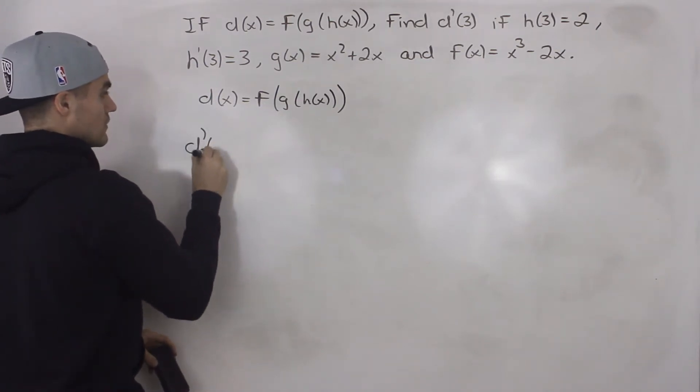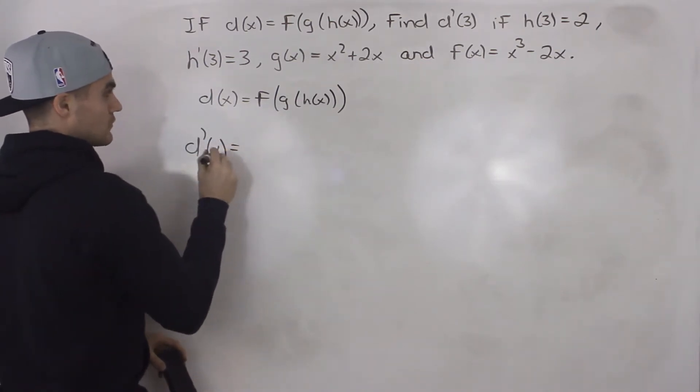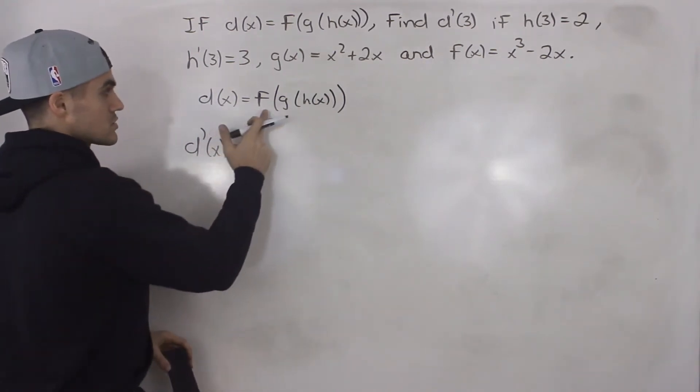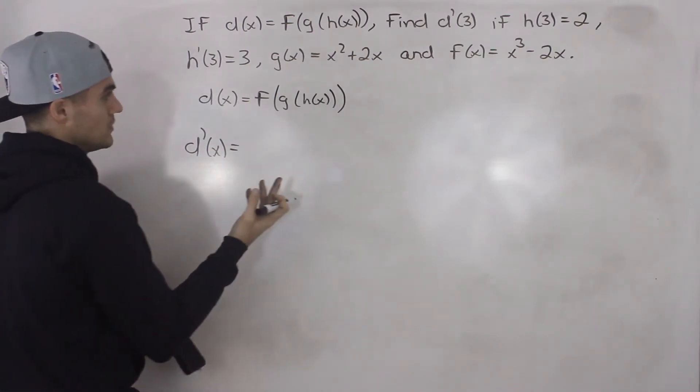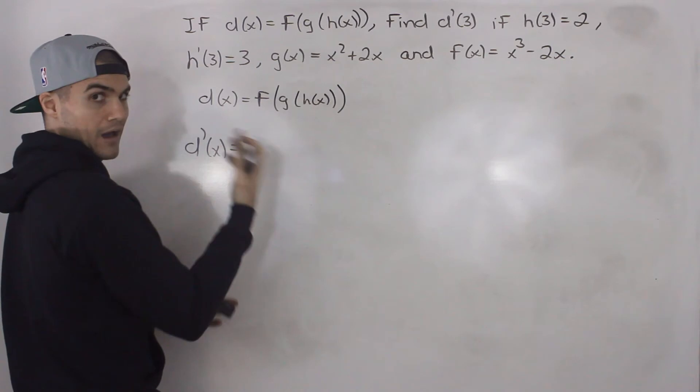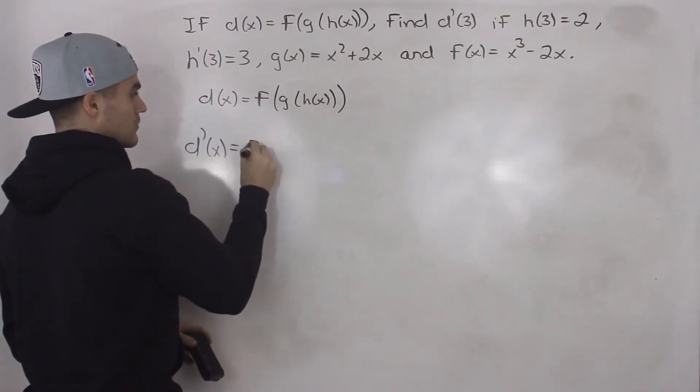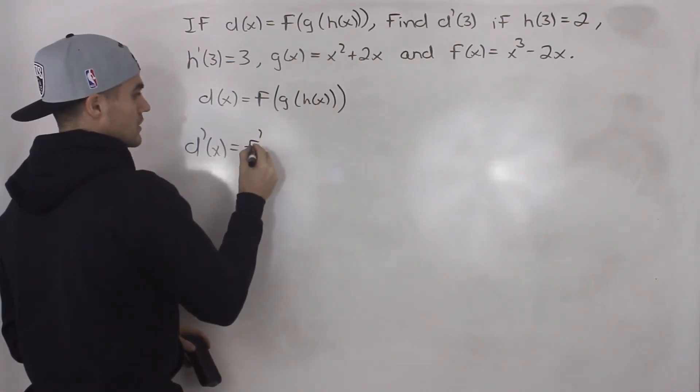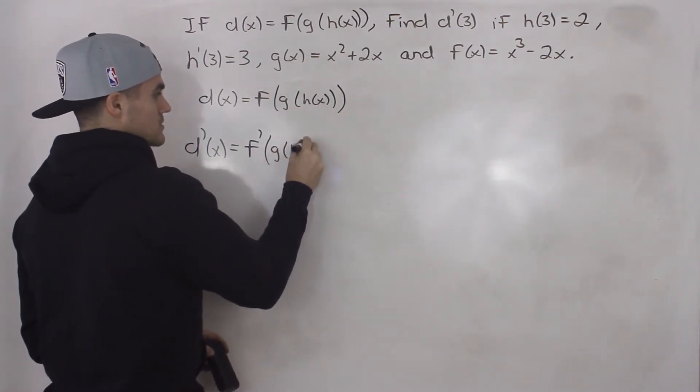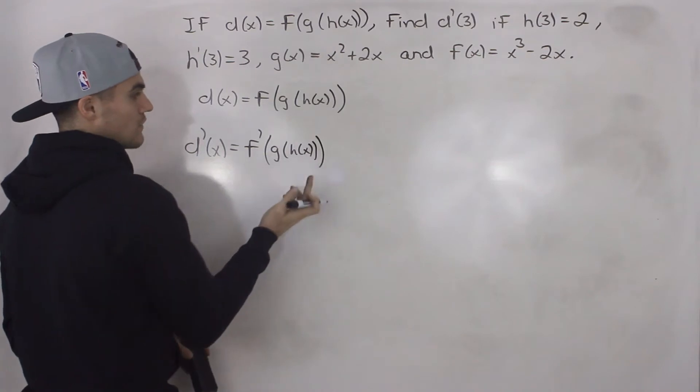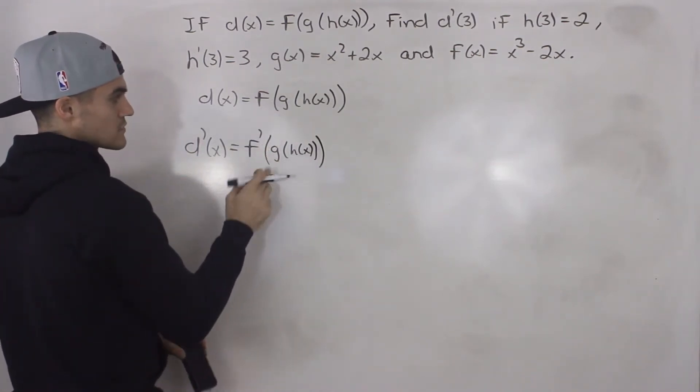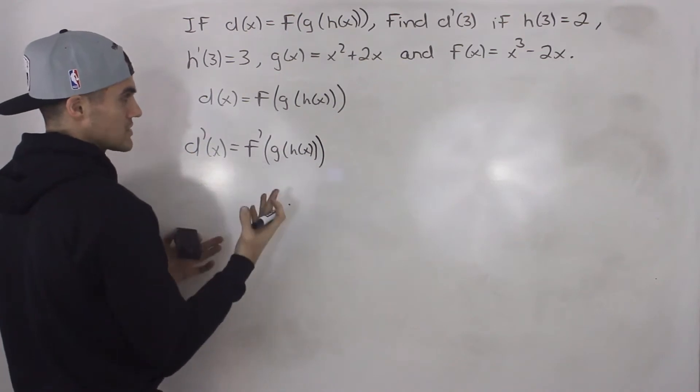So let's start off by finding a general expression for the derivative first because this is a pretty complex function itself. So the derivative of this function, notice we're going to have to apply the chain rule, but we're going to have to apply it twice because there's three functions we're dealing with. So what we do when we have something like this is we take the derivative of the outer function first, like we've been doing before in the lecture videos. And then we keep the inside bracket the same. So that will just be g of h of x. And then we just have f prime instead of f. So we took the derivative of the outside function first.